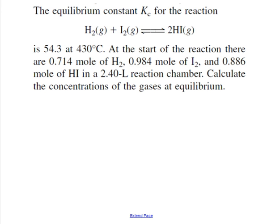The question says that the equilibrium constant for this reaction of hydrogen and iodine gases synthesizing HI gas is 54.3 at 430 degrees Celsius. At the start of the reaction we can see there's a certain number of moles of H2, I2, and HI in a 2.40 liter reaction chamber. When I see moles and volume, I immediately think of the formula C equals n over V. I'm going to convert those moles to molarities.